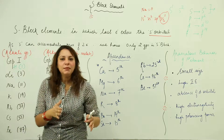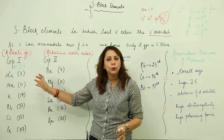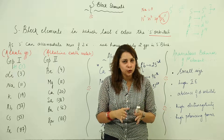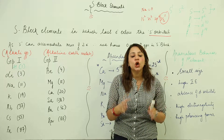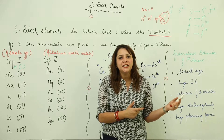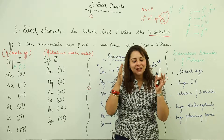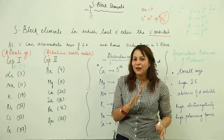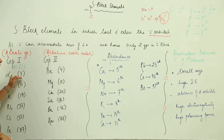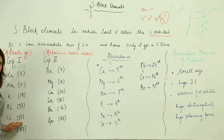Hydrogen resembles Group 1 in some properties and also resembles Group 17 in some properties, but it is not regarded as an alkali metal. It is exceptionally placed in the alkali metal group. So to summarize Group 1: lithium (3), sodium (11), potassium (19), rubidium (37), cesium (55), and francium (87).